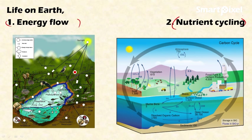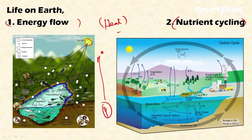In energy flow, energy is fixed by plants (autotrophs) with the help of sunlight and stored as carbohydrates. This energy is utilized by primary consumers like rabbits, deer, and grasshoppers, and moves to the next trophic level through the food chain. In this process, energy is continuously lost in the form of heat, so less energy is available to the tertiary consumer.